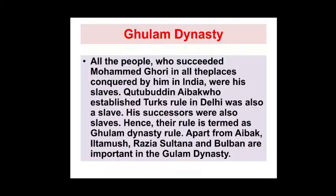On the India map, all five dynasties ruled the overall northern regions. The first dynasty is the Ghulam Dynasty. All the people who succeeded Muhammad Ghori in places conquered by him in India were his slaves. Qutubdin Aibak, who established the Turks' rule in Delhi, was also a slave, and his successors were also slaves. Hence their rule is termed the Ghulam Dynasty. Ghulam means slave.